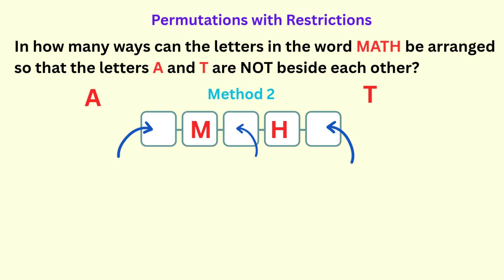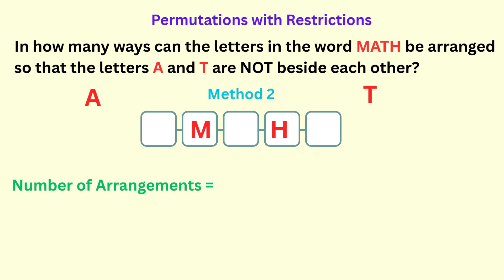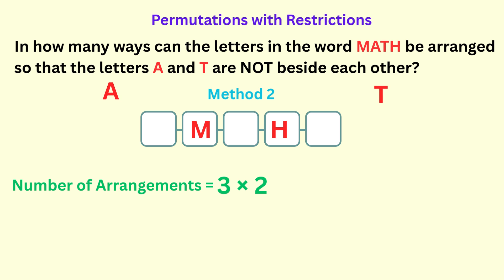How many blank spaces do we have? We have three blank spaces, which means we have three choices of empty spaces in which the letters A and T can be placed, so we put down the number three. If we place any of the letters — whether A or T — into one of the empty spaces, we will be left with two choices, so we put down the number two. Also, the letters M and H are two distinct items, so they can be arranged two factorial ways. So we multiply three times two times two factorial, which gives us the same twelve ways found earlier.